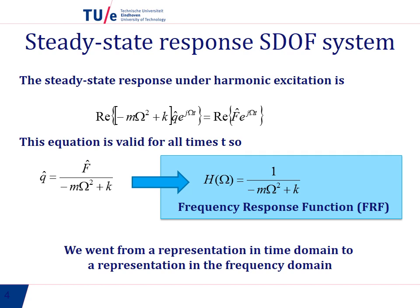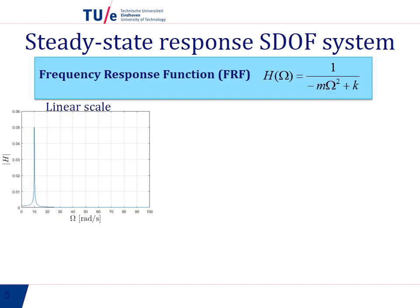The question is, how does this function look like? If we plot it in a linear scale, it would look like this. So we see a peak that goes to infinity at the eigenfrequency of the system, which is square root of k divided by m. But outside this peak we don't see much in this linear scale.